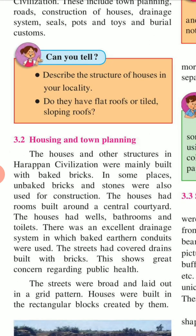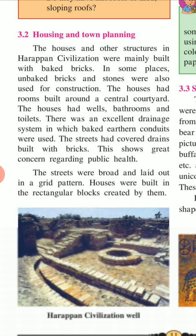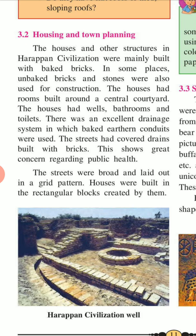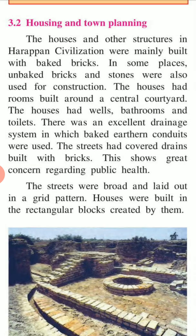Can you describe the structures of houses in your locality? Do they have flat roofs or tilted sloping roofs? The houses and other structures in the Harappan civilization were mainly built with baked bricks. In some places, unbaked bricks and stones were also used for construction. The houses had rooms built around a central courtyard, with walls, bathrooms, and toilets.